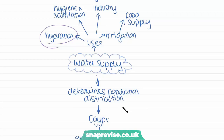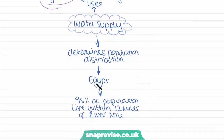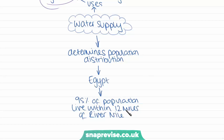Just like soil type, water supply also determines population distribution. A key example is Egypt, where the main source of fresh water is the River Nile and 90% of the population live within 12 miles of it, showing a really high concentration of population density around the river. This is especially significant because Egypt is mostly a desert environment.